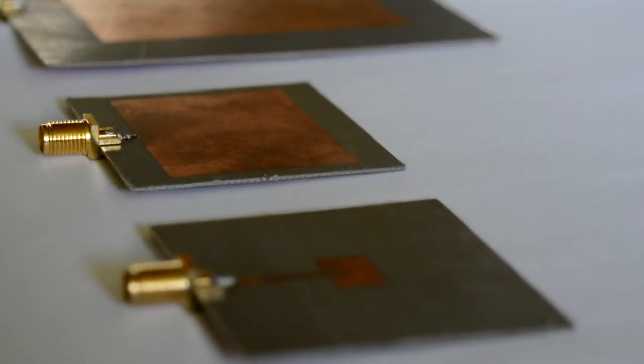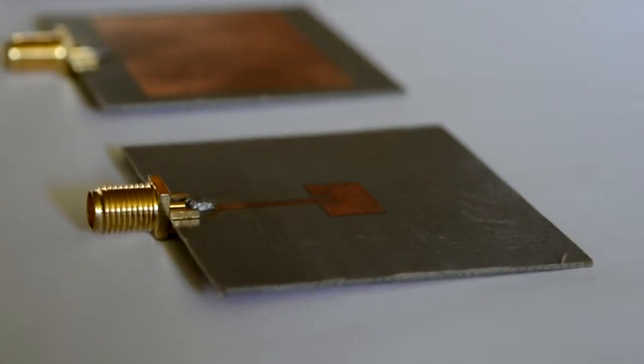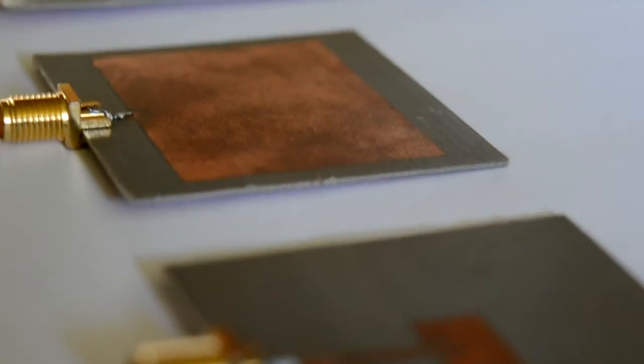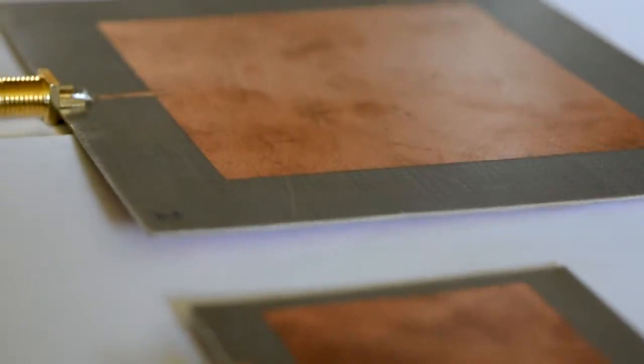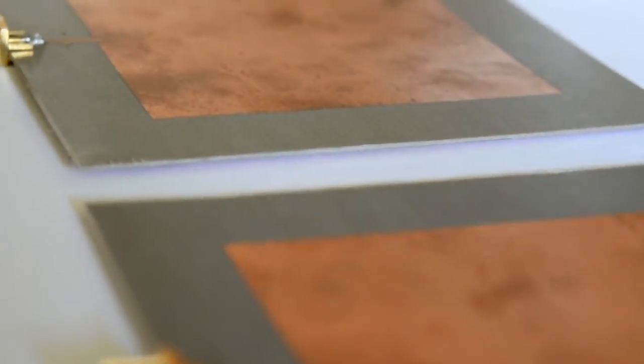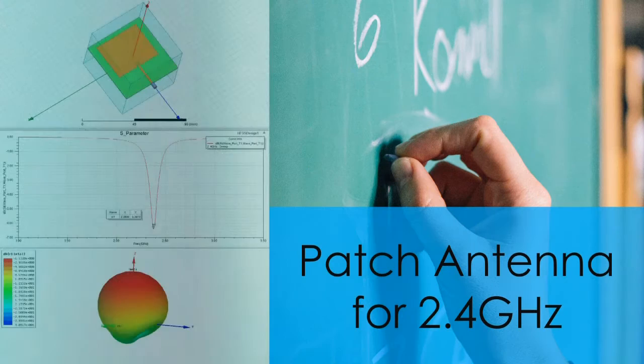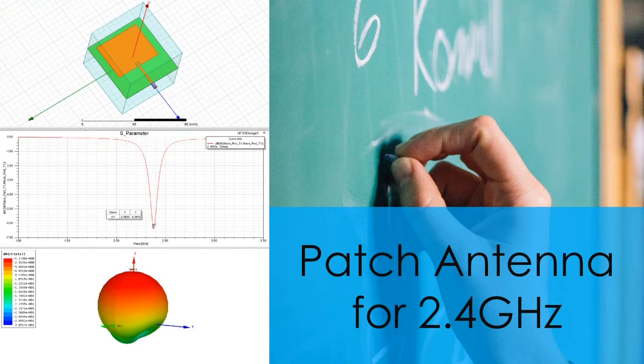There are some advantages of choosing patch antennas. The antenna is printed directly onto a circuit board. They are easily fabricated, making them cost effective. Low profile design, often square or rectangular, allows them to be mounted to flat surfaces.